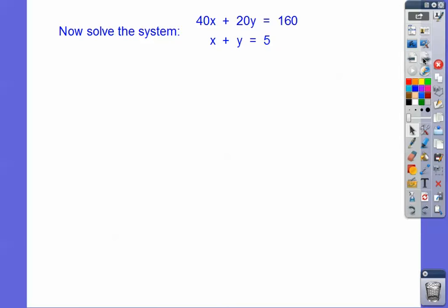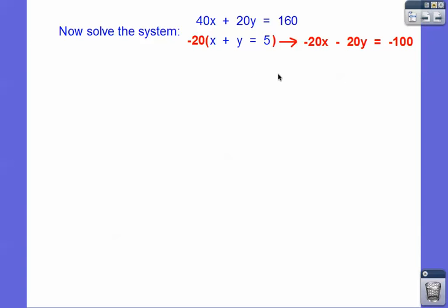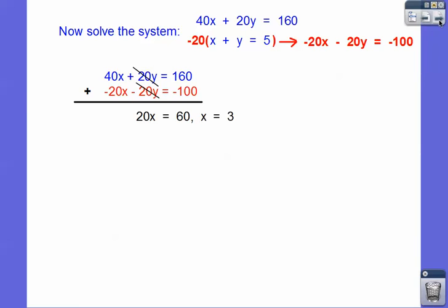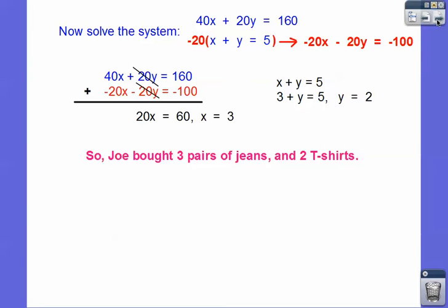We're going to solve the system: 40X plus 20Y equals 160, and X plus Y equals 5. I think it's easiest to multiply the bottom equation by negative 20. That way it'll cancel out with this positive 20Y. So 5 times negative 20 is negative 100. The 20s will cancel, and 40 plus negative 20 is 20X, and this equals 60, so X equals 3. Then X plus Y equals 5, so Y equals 2. So Joe bought three pairs of jeans and two t-shirts.